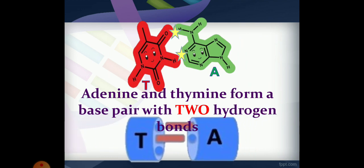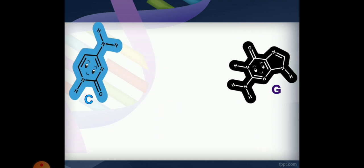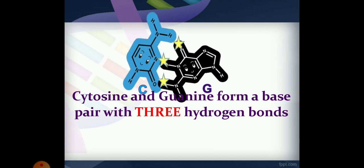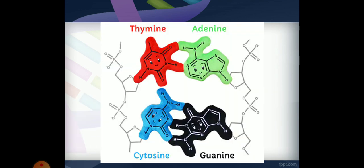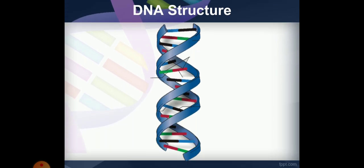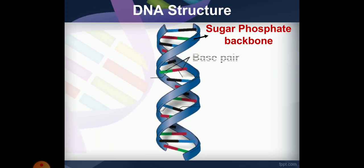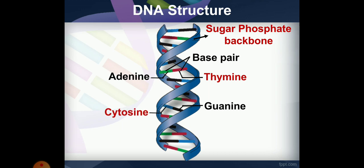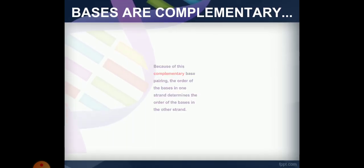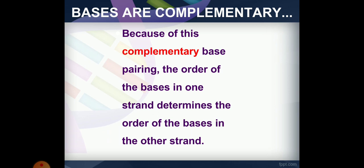The backbone is made of sugar and phosphate; the rungs are made of base pairs. Thymine pairs with adenine, and guanine pairs with cytosine. Because of this complementary base pairing, the order of bases in one strand determines the order of bases in the other strand.